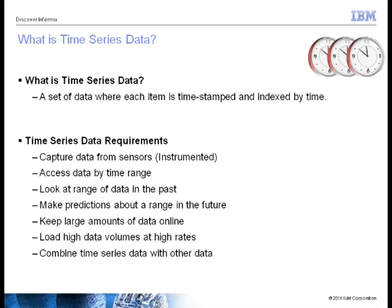Time series data also has a unique set of requirements. People want to frequently capture data from sensors — with millions of sensors generating data rapidly. Once captured, they want to access it by time range, sometimes with cutoffs like 10 p.m. to 10 a.m. or 6 p.m. to 12 a.m. They want to do what-ifs, look at historical data, make predictions about future time ranges, and keep a lot of data online. Finally, they want to combine time series data with other data, including unstructured information from other sources, implying connectivity and the ability to build composite applications.